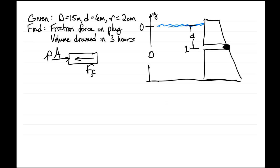So we need the pressure at location 1. We can just get that by our pressure equation, p1 equals rho gd. And that gives us that the friction force is going to be rho gd times the cross-sectional area of the pipe, which is pi r squared.